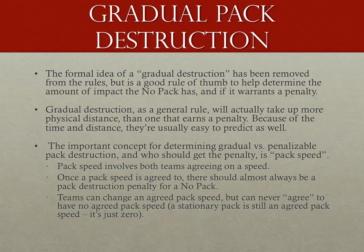Because a pack involves skaters from both teams, pack speed also involves skaters from both teams. At least one member of each team — although usually but not necessarily the majority of blockers on the track — must be traveling at roughly the same speed to have a pack speed. As soon as they are traveling the same speed, a pack speed has been established, and any variation must be taken by both teams or there will be a destruction of the pack penalty.